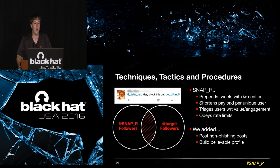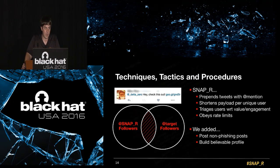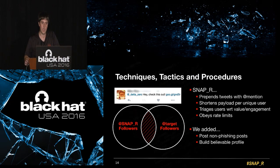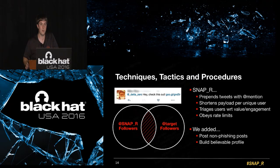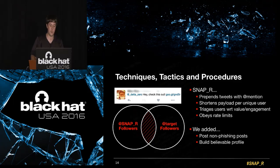Our tool obeys rate limits, though bad actors can get around these. A few things not in the box that you'll want to do: if you only post links, Twitter is good at finding that and banning you, so you need to mix in normal content — some non-phishing posts, some posts without links, some without app mentions. You also need to build a believable profile; if you just have a standard egg profile, nobody's going to click your links. Those two things need to be added beyond what the tool provides.